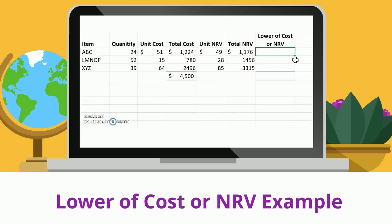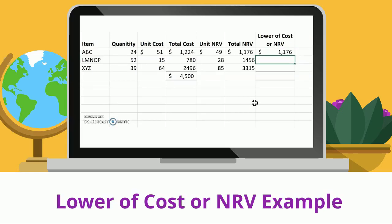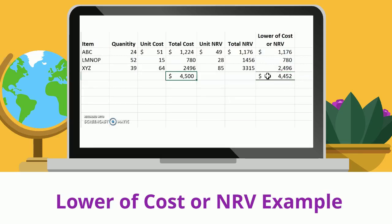We just want to determine which is lower for each — cost or net realizable value. For ABC, total cost is $1,224 and total net realizable value is $1,176, so the lower is $1,176. For LMNOP, cost is $780 and net realizable value is $1,456, so the lower is cost at $780. For XYZ, total cost is $2,496 and total net realizable value is $3,315, so the lower is cost. We only had one item where net realizable value was lower — that was ABC.